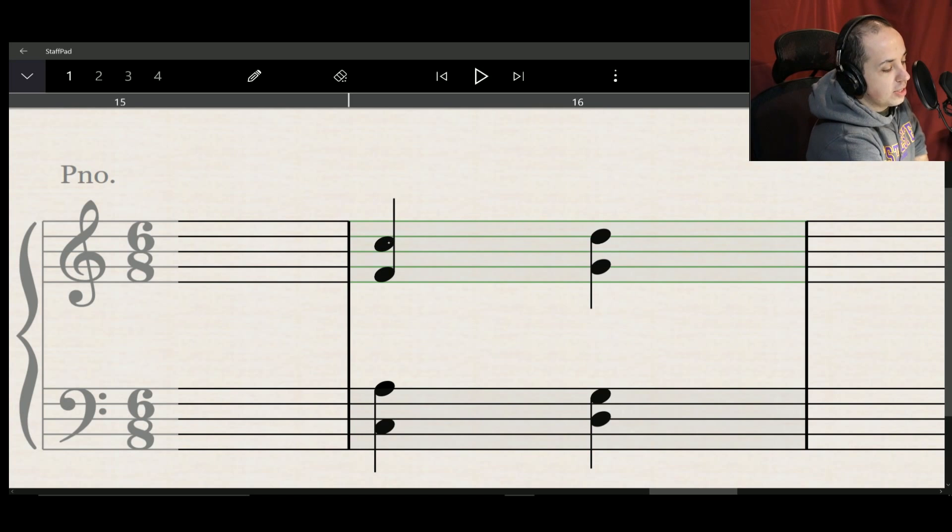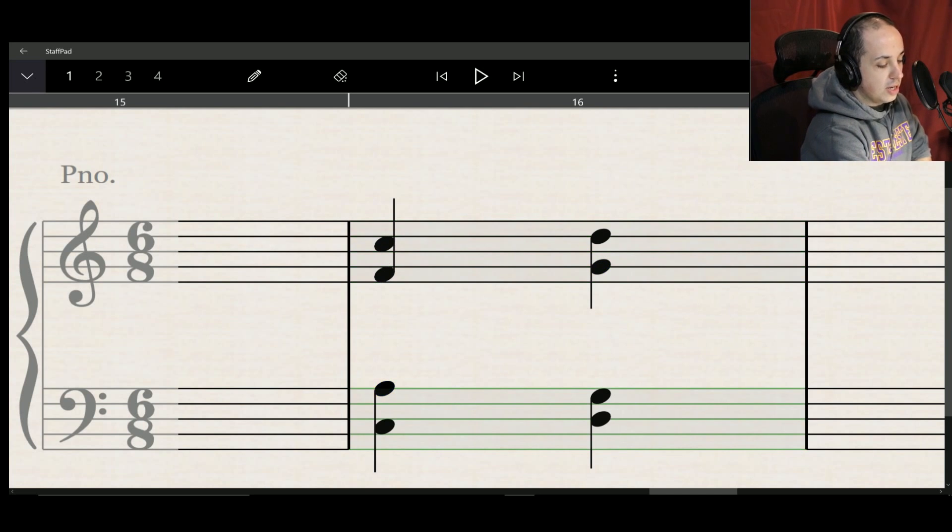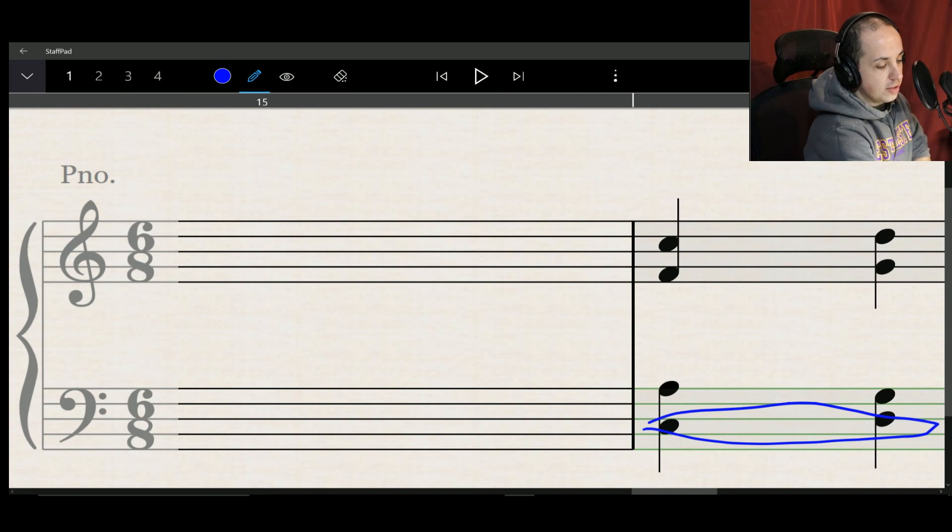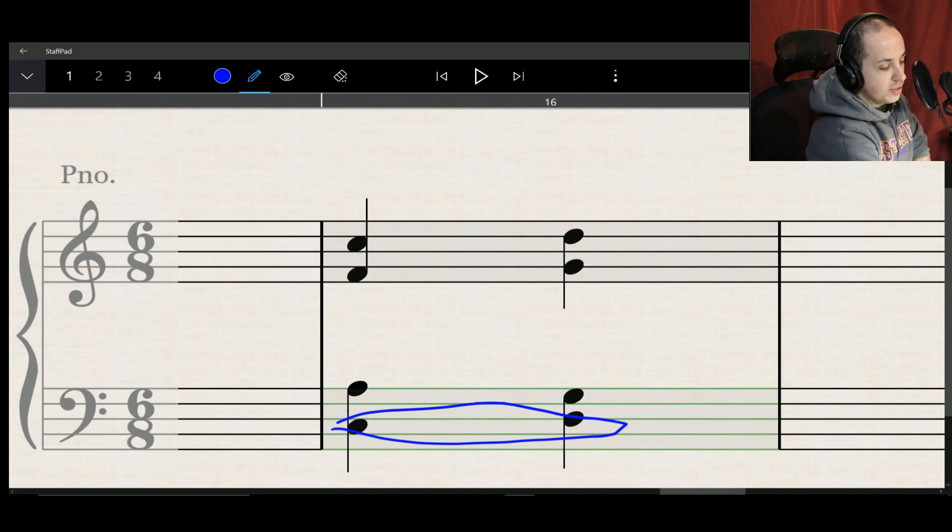So what you can start looking at is how each voice moves between one another. So for example, the C, the top voice moves from C to D, you got the middle voice moving from F to G, you got the next one moving from A to G, and then the bottom one from C to D. So obviously you can start tracing them across and start seeing them in terms of actual voices.